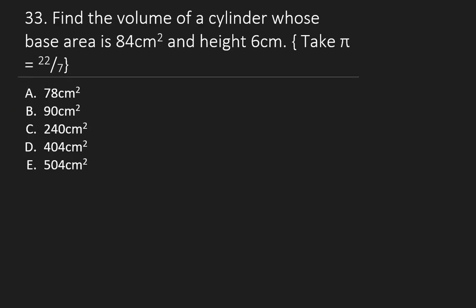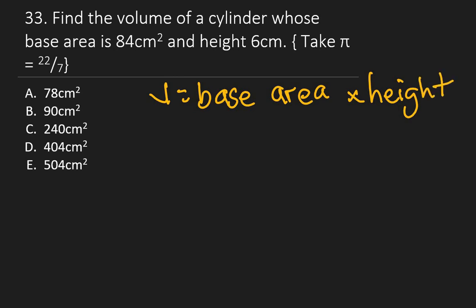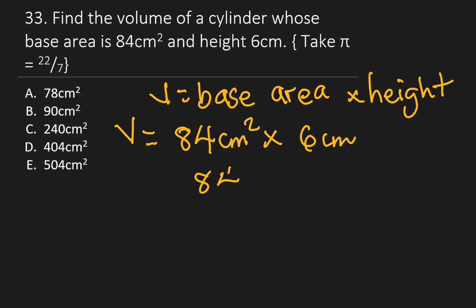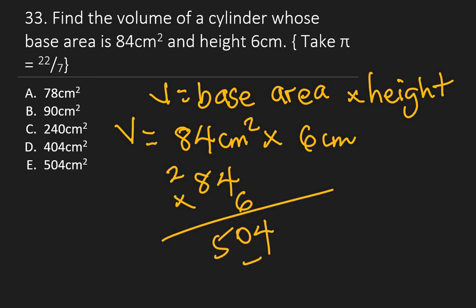Question 33: Find the volume of a cylinder whose base area is 84 cm² and height is 6 cm. Volume = base area × height = 84 × 6. 6 × 4 = 24, carry 2; 6 × 8 = 48 + 2 = 50. Volume = 504 cm³. The right answer is E.